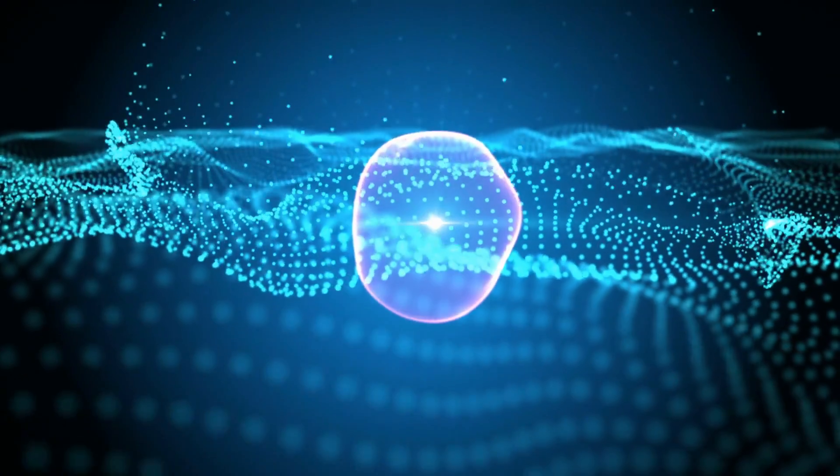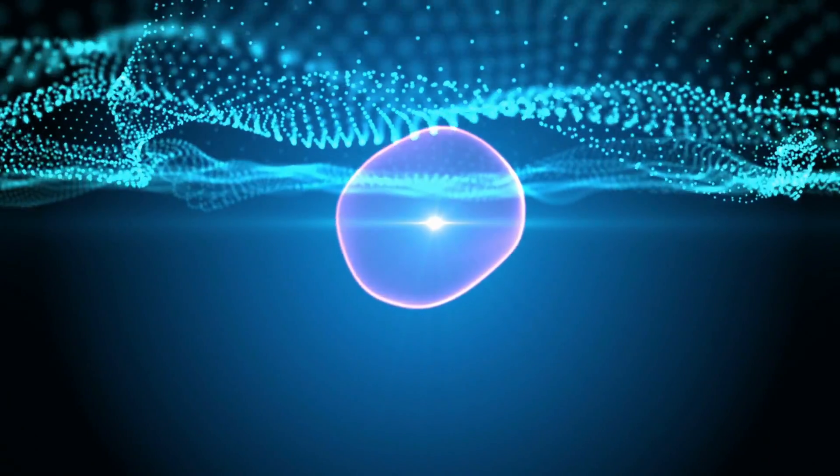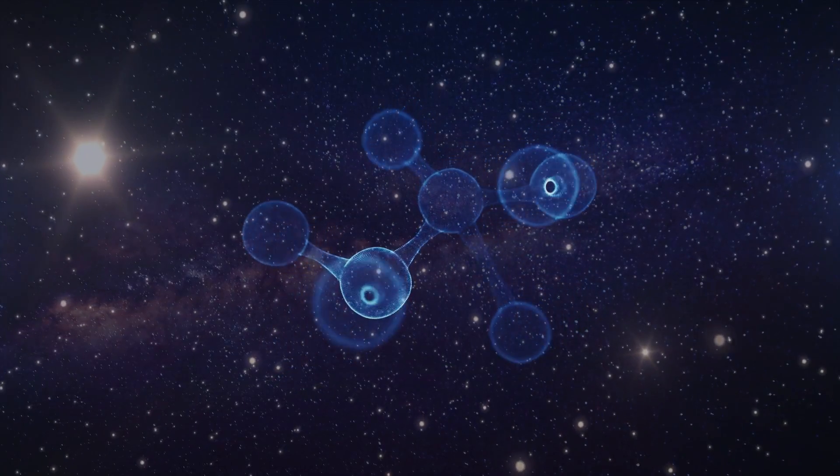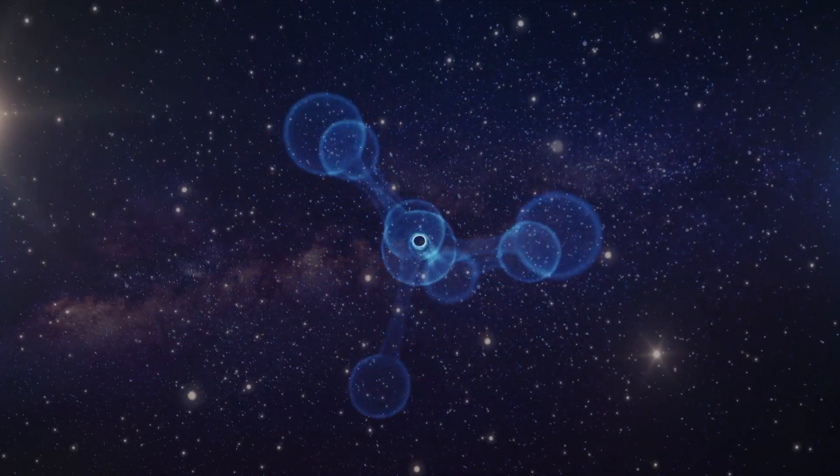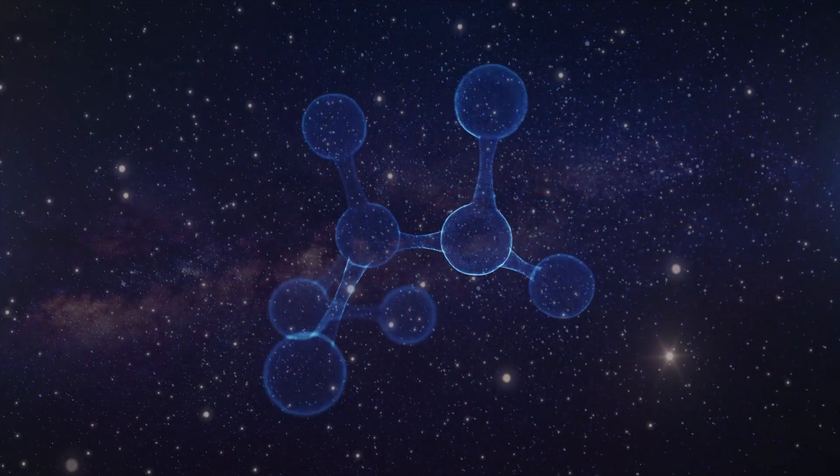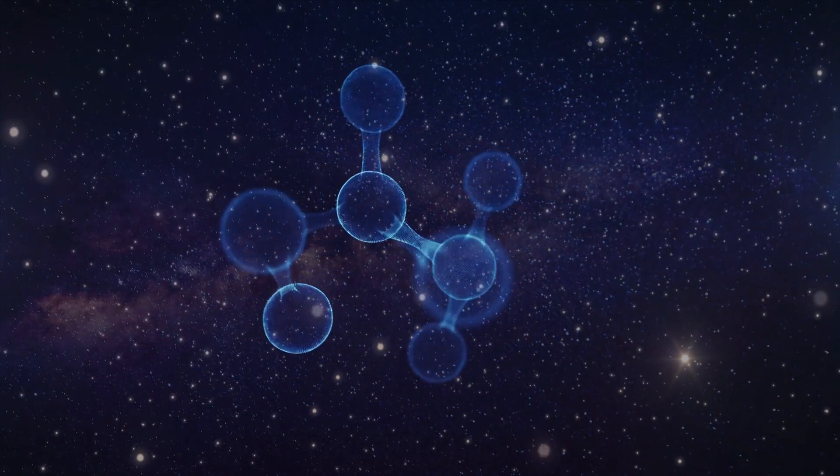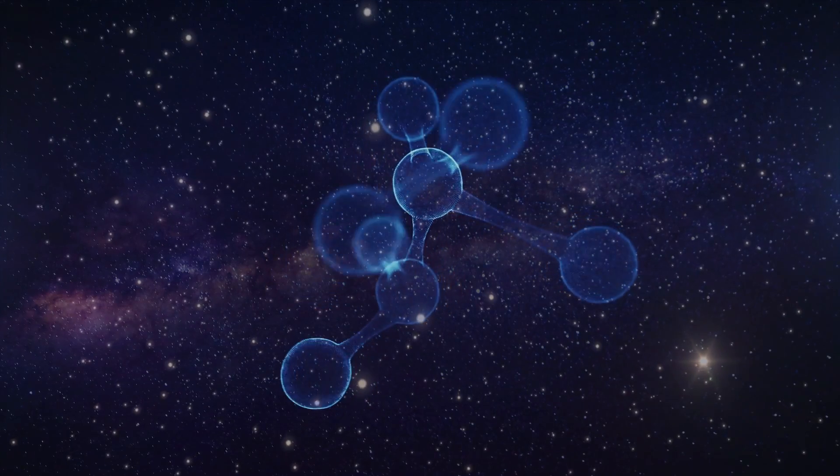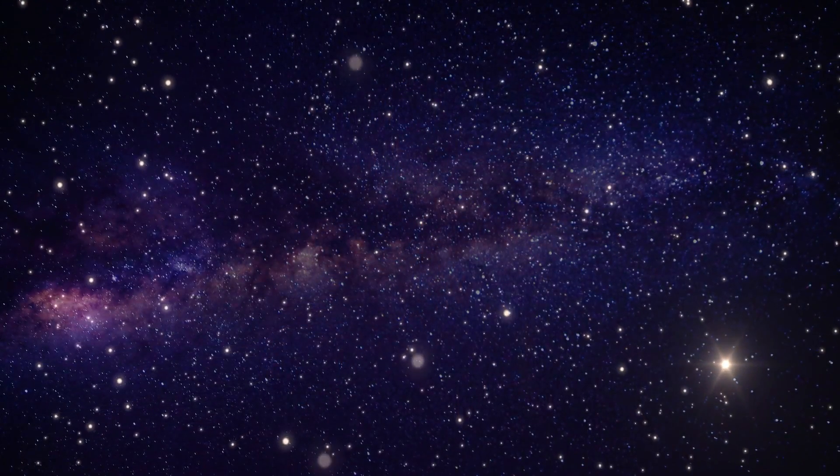WIMPs and axions are non-baryonic elementary particles. Baryonic dark matter, composed of atoms or molecules, has been ruled out in conventional cosmology because it is believed there's not enough of it in the universe.